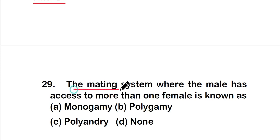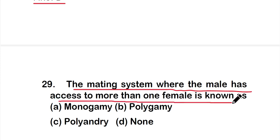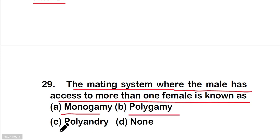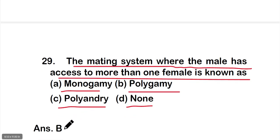Question number 29: The mating system where the male has access to more than one female is known as — option A: monogamy, option B: polygamy, option C: polyandry, or option D: none. The correct answer is option B — polygamy.